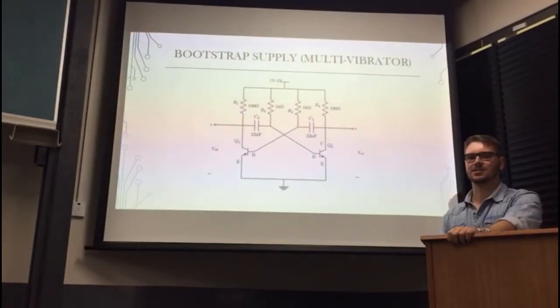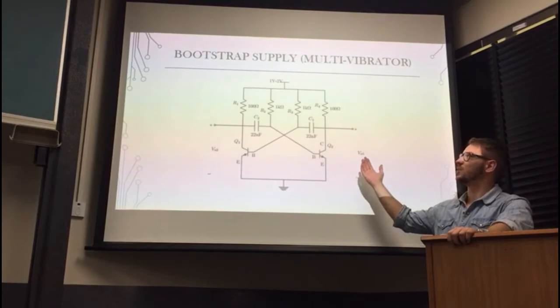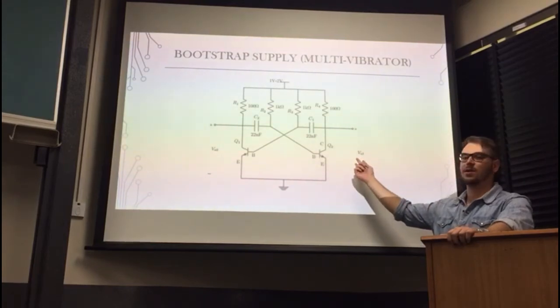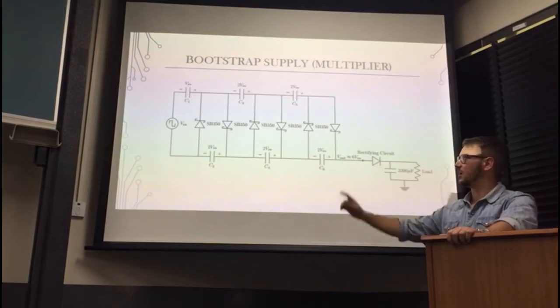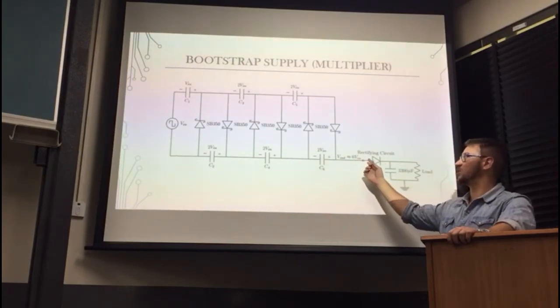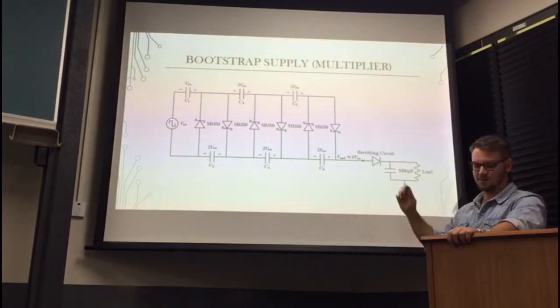Here we are on the discharge side. This is the multi-vibrator portion of the bootstrap, which supplies a bipolar output for the multiplier. Okay, this multiplier supplies enough voltage when rectified to the microprocessor.